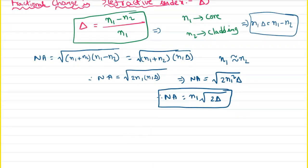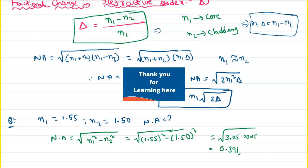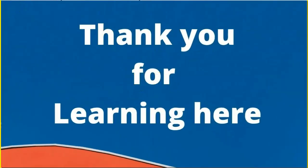Now let's solve an example problem. An optical fiber has a refractive index of core N1 = 1.55 and refractive index of cladding N2 = 1.50. Find the numerical aperture. Using the formula NA = √(N1² − N2²): NA = √(1.55² − 1.50²) = √(2.4025 − 2.25) = √(0.1525) ≈ 0.391. The numerical aperture is 0.391.